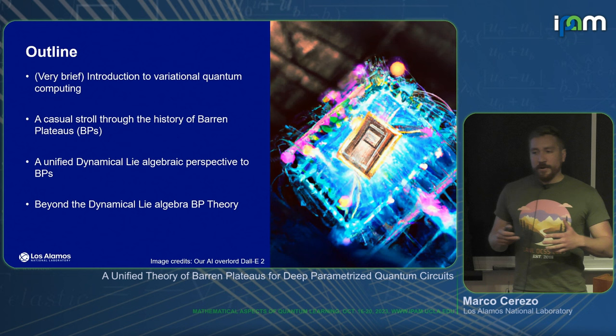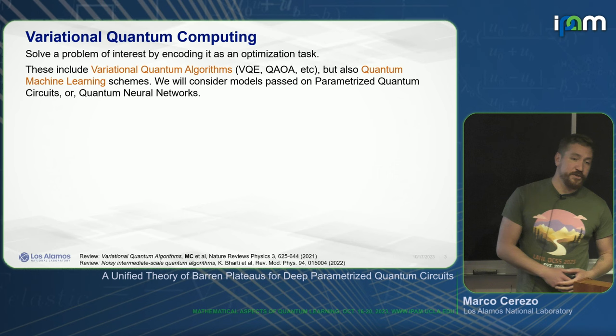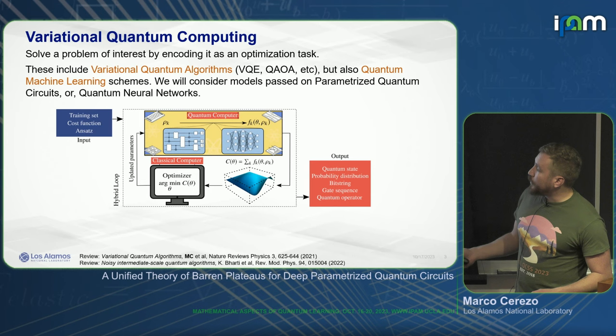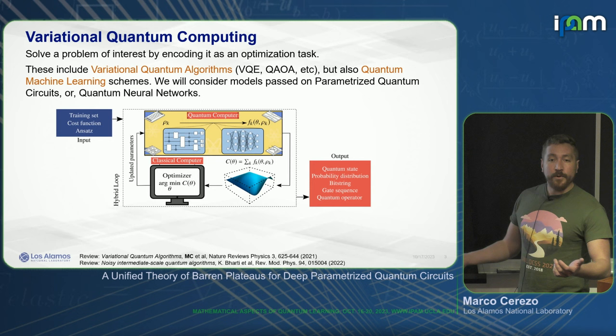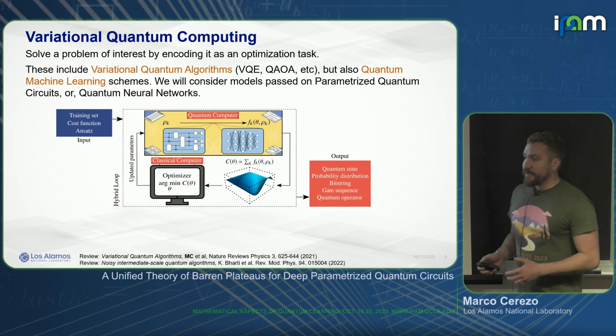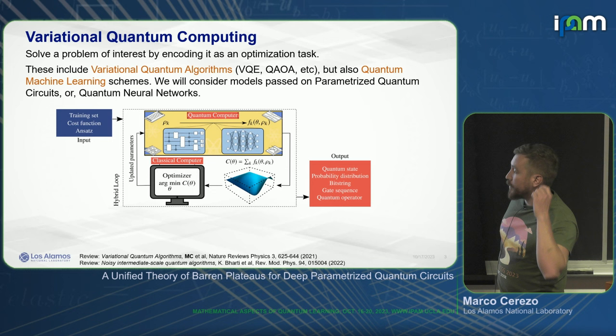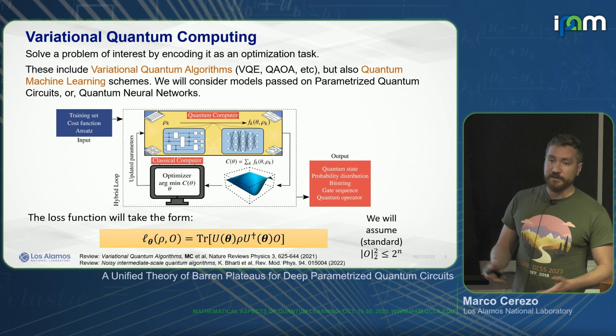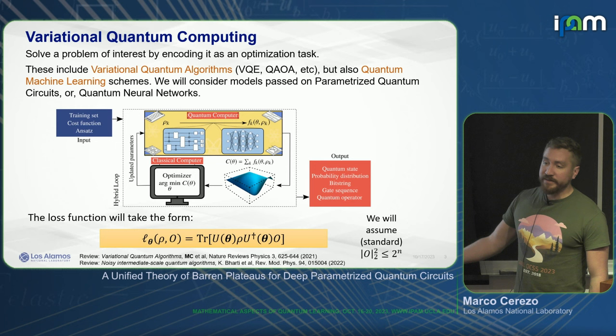Variational quantum computing — we all know the spiel. We have a quantum computer limited in size and circuit depth, and we pair it with a classical computer in a hybrid optimization loop. I'll be talking generally about variational quantum computing as an abstract framework containing quantum machine learning and standard variational quantum algorithms. I'll be solely considering loss functions of this form, or those composed from these basic elements, even when there are multiple states or measurements.